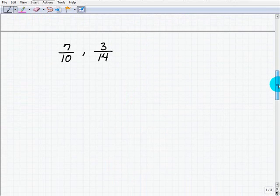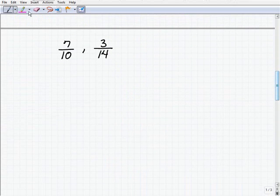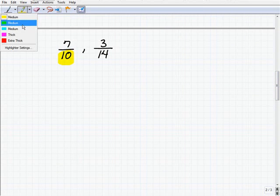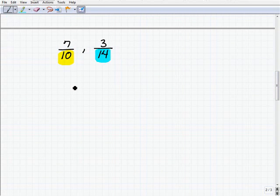Let's take a look at these pair of fractions. We have seven tenths and three fourteenths. So once again, we have to find the LCM of these two numbers here, 10 and 14.